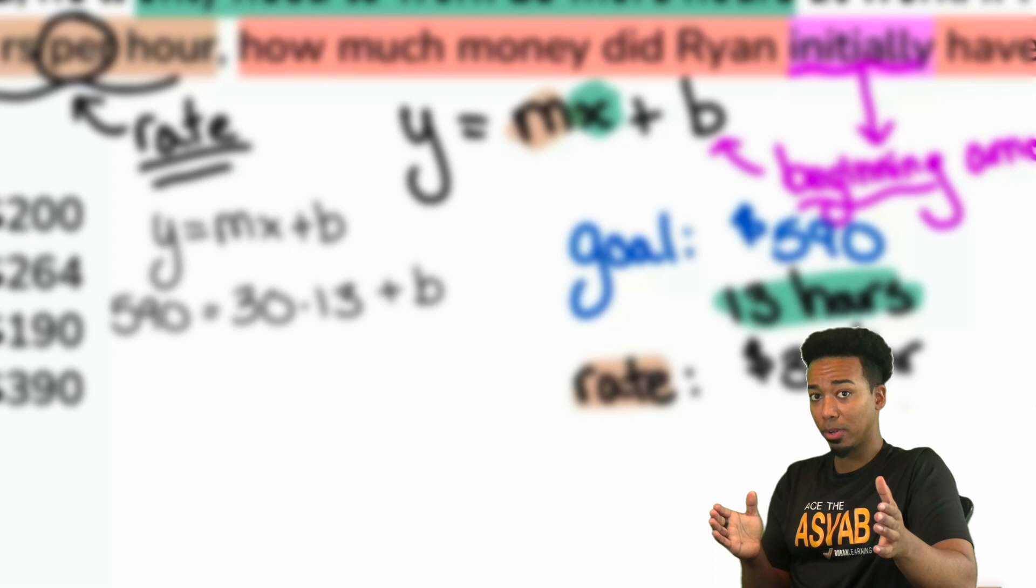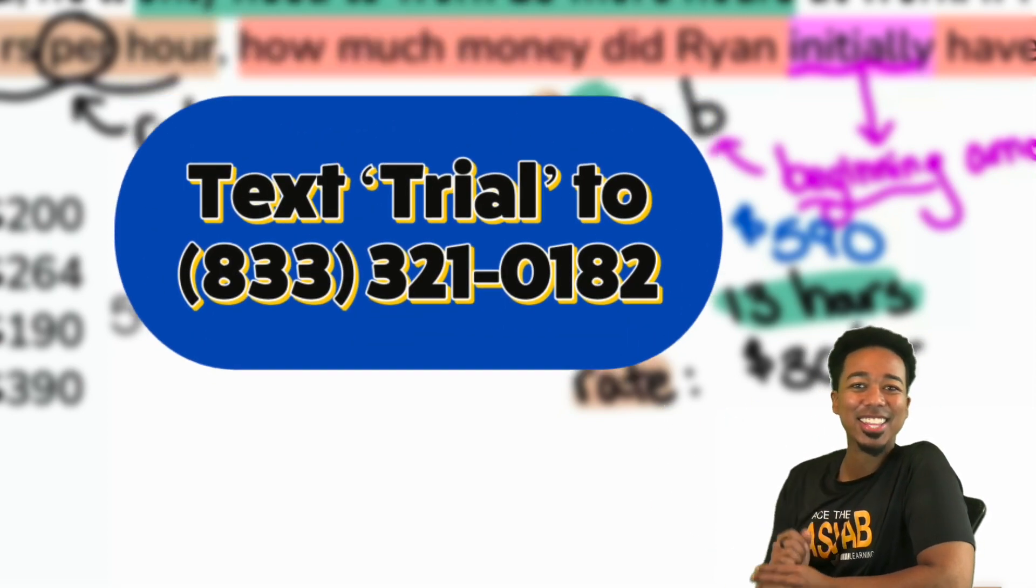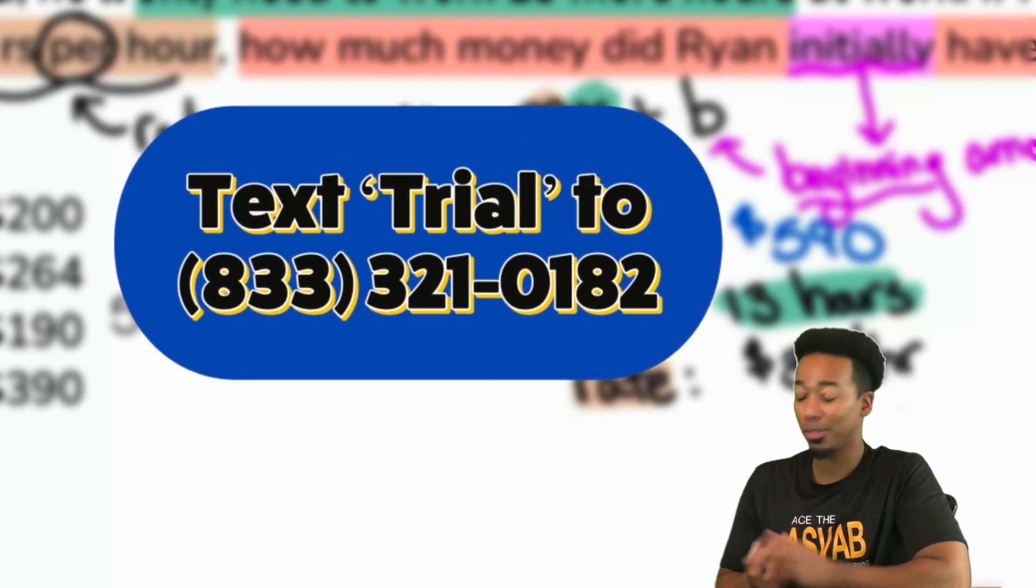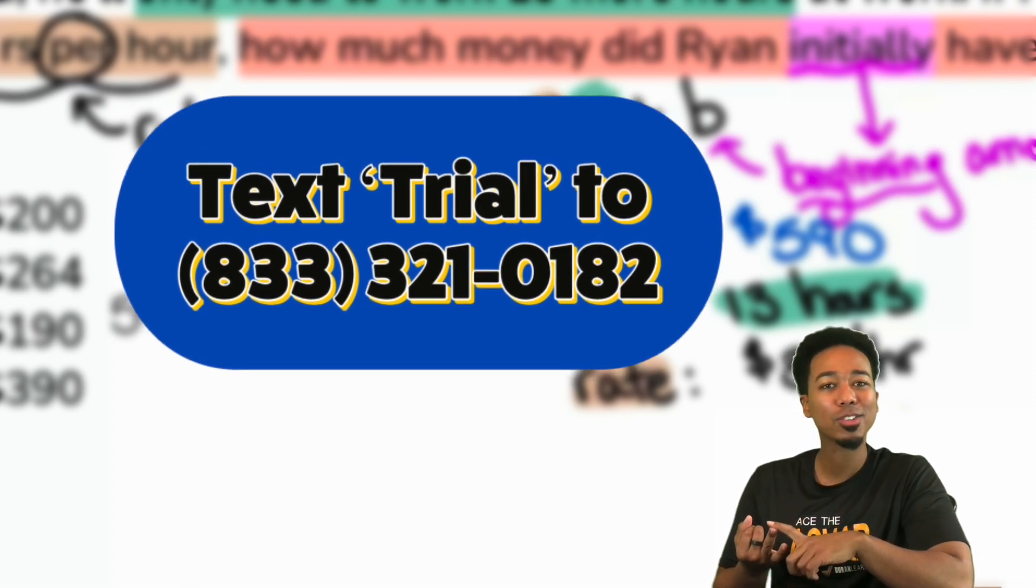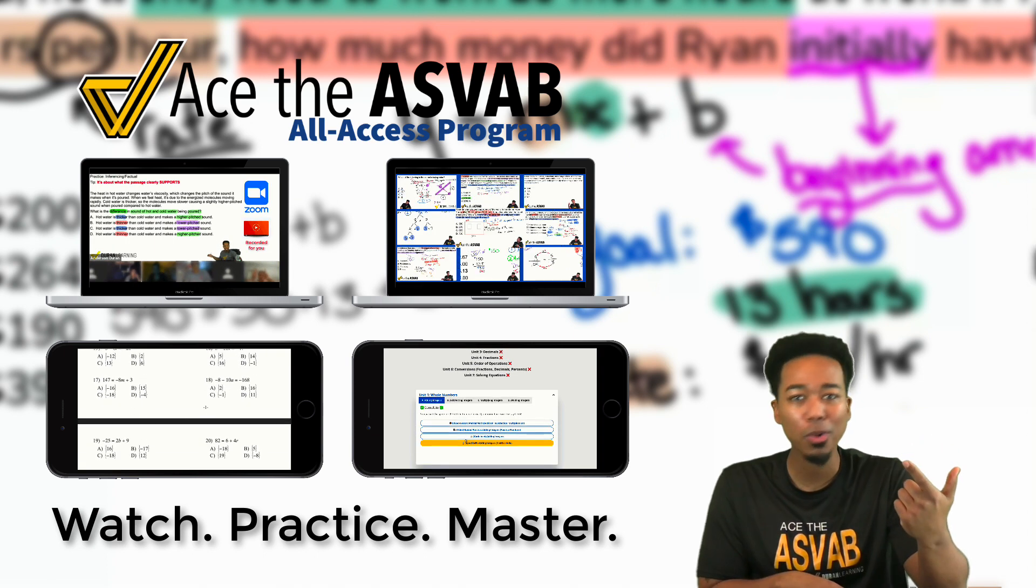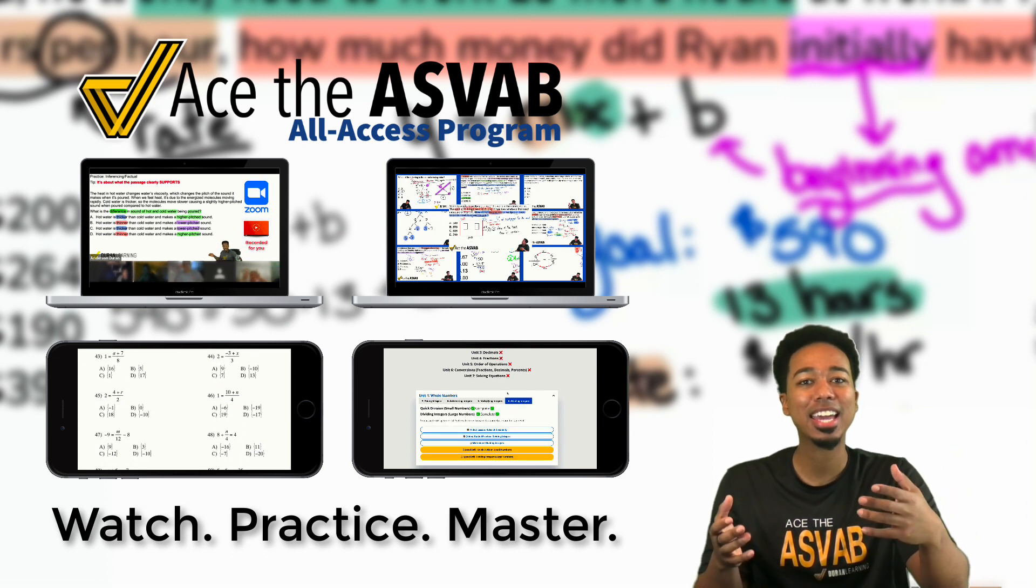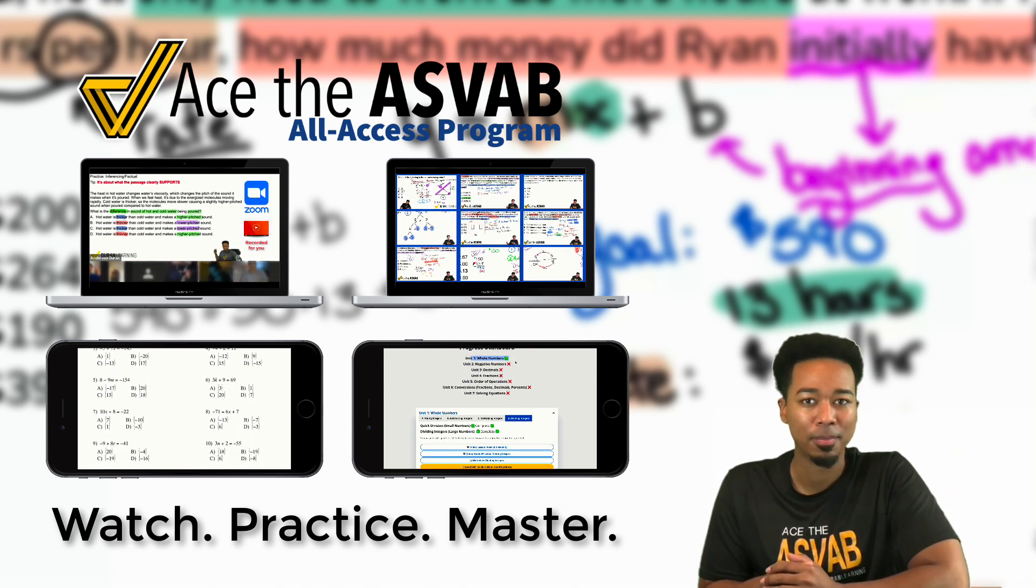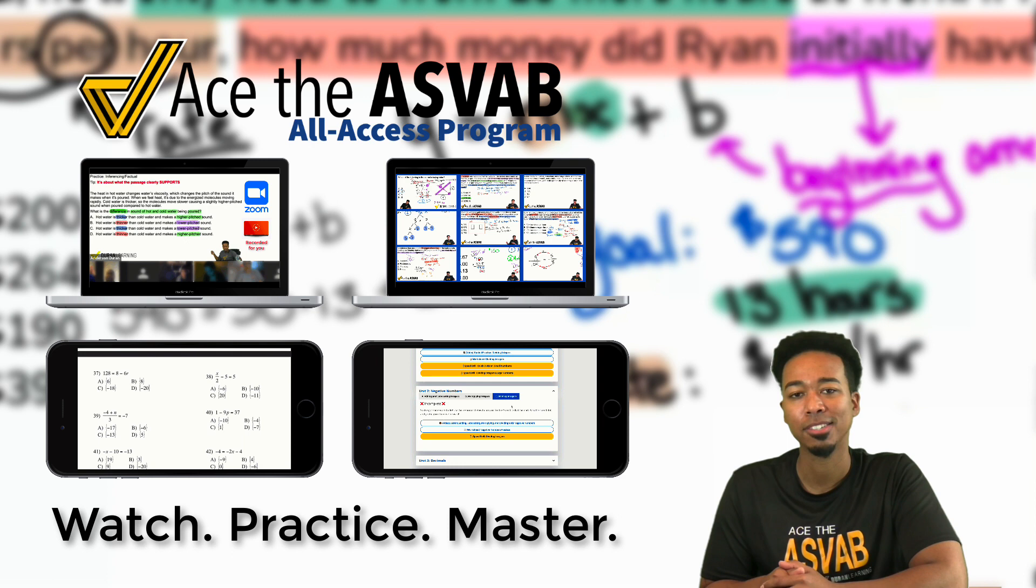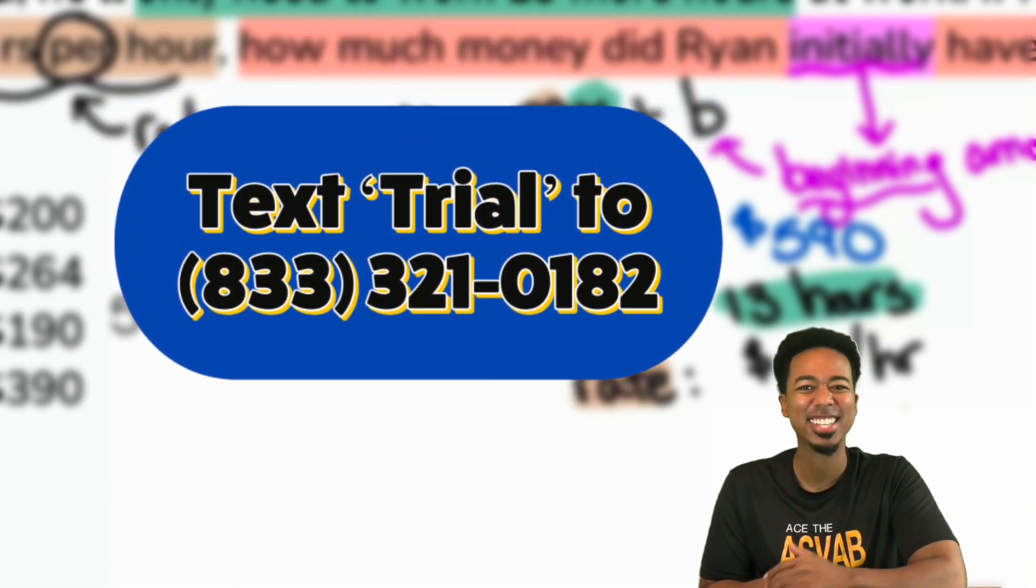All right, look. If you like Chipotle burrito bowls, then you are going to love my ASVAB program. Go ahead and text TRIAL to 833-321-0182, and I'm going to show you how to raise your score the right way. You won't have to pay a dime, you won't have to put your credit card in. All you have to do is confirm your email and phone number and you get access to all of my classes for a full week - all the recordings, over 500 available, over 20,000 practice problems with step-by-step solutions, and everything else that comes with the program. There is no reason why you shouldn't take advantage of this, because I'm here to show you that raising your score and getting the job you want is not a fantasy. It can be a reality if you're willing to work hard. Go ahead and sign up now, and I'll see you there.